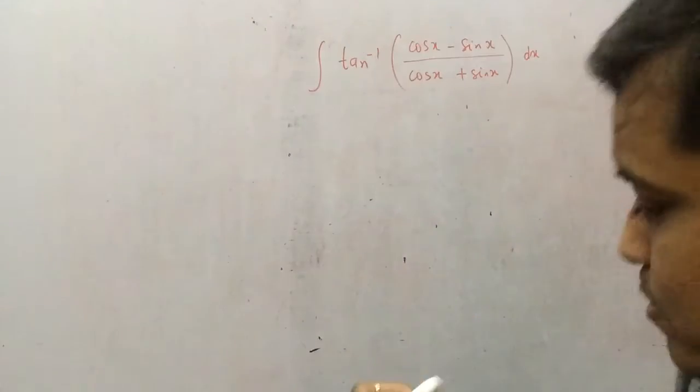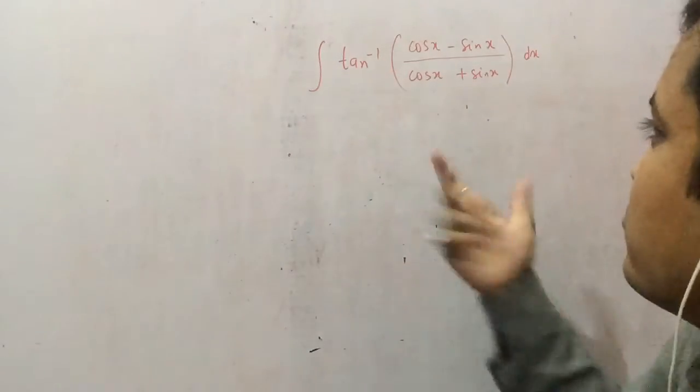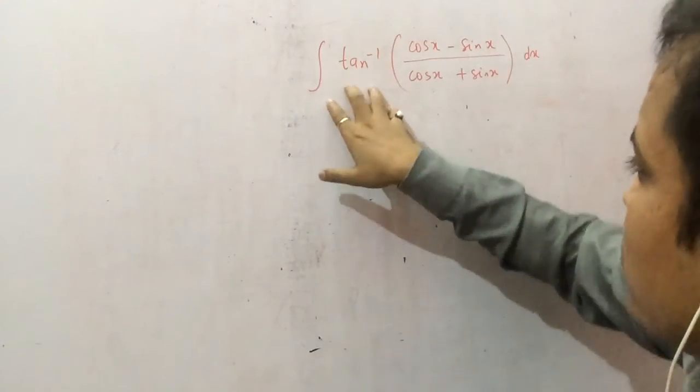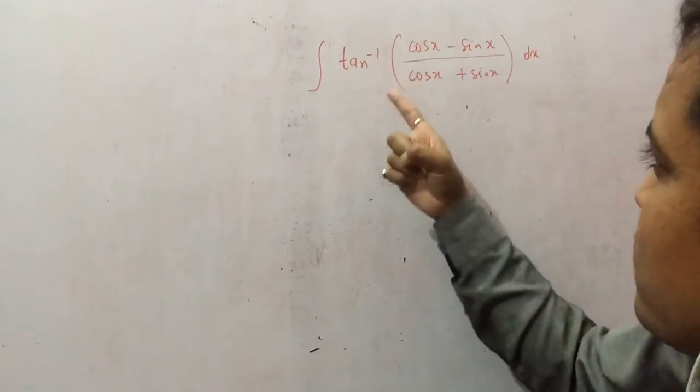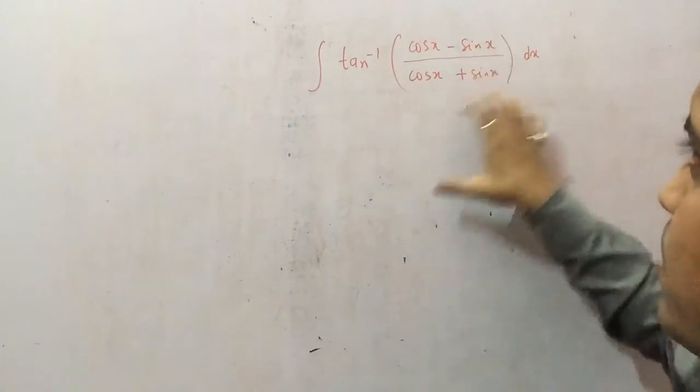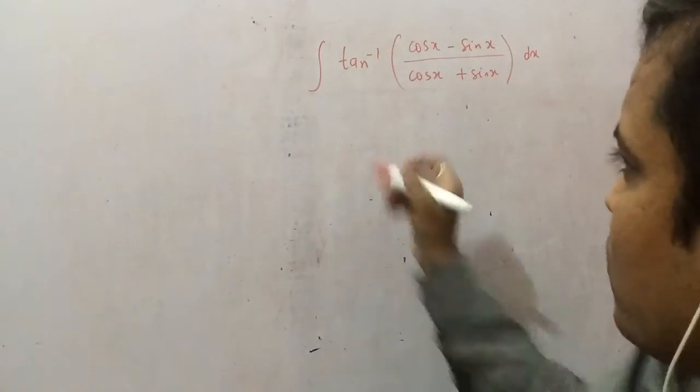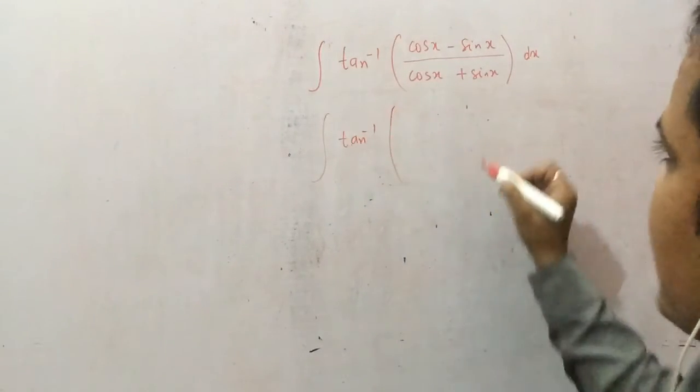We have to convert this, we have to cancel this actually. Tan inverse of something. You know that tan inverse of tan x equals x. So manipulate this bracket into tan x. How can we manipulate it? Take common cos x in the numerator.